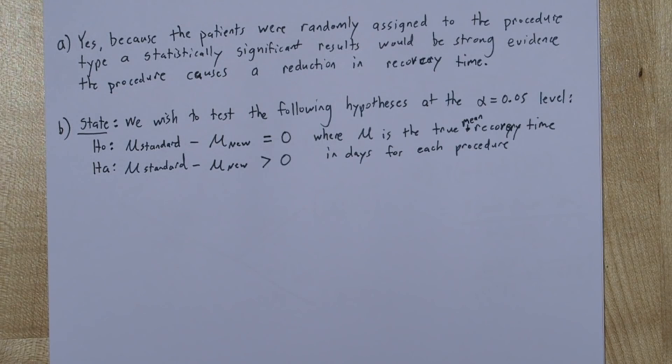Our alternative hypothesis is that mu substandard minus mu subnu is greater than zero. In other words, the standard procedure has a longer mean recovery time. And I'm also going to write where mu is the true mean recovery time in days for each procedure, just to make sure I've defined my parameters.